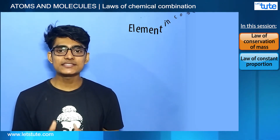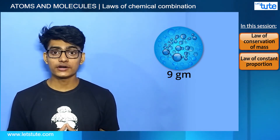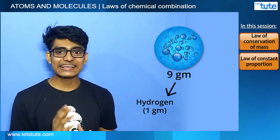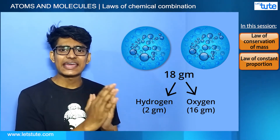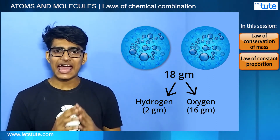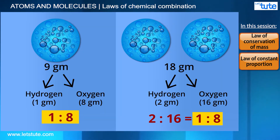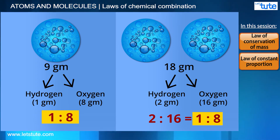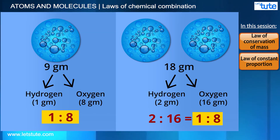Same in molecules — the elements in a compound are exactly in proportion. In 9 grams of water, 1 gram is hydrogen and 8 grams are oxygen. If I double the amount of water to 18 grams, then there will be exactly 2 grams of hydrogen and 16 grams of oxygen. That simply means the proportion of hydrogen and oxygen is always constant — irrespective of where it's found, whether it's salty water or fresh water. The proportion of hydrogen and oxygen will always be in the ratio of 1 is to 8.